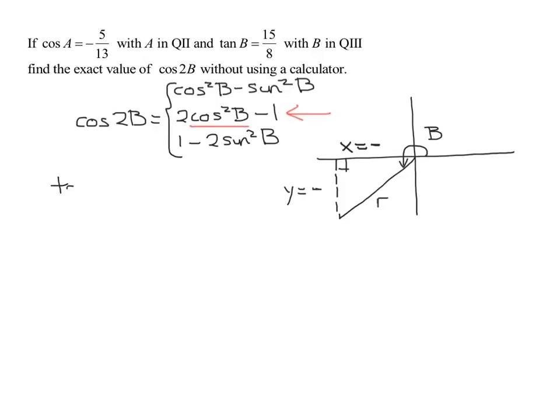Well, we were told that the tangent of angle B was equal to 15 over 8. And remember, what is that in terms of x, y, and r? It is y over x.